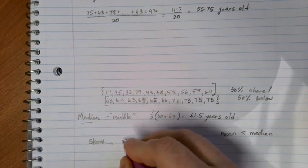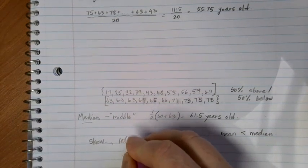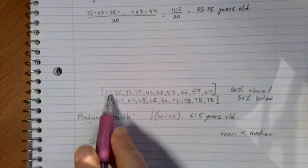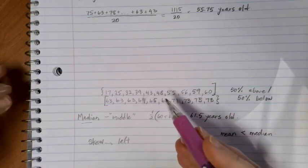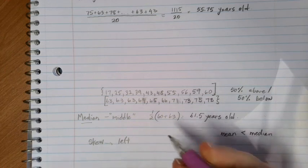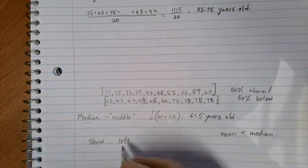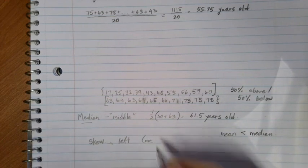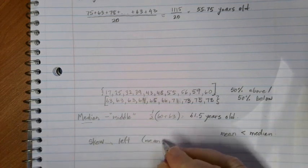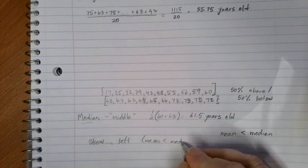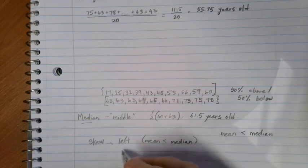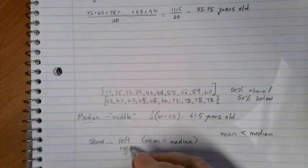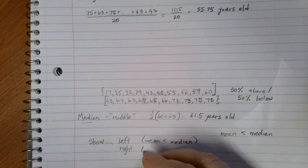In this case, we have what's called a left skew. That is, we have some really far out data on the left hand side that's kind of pulling the average mean down. So a skew left happens when the mean is less than the median.